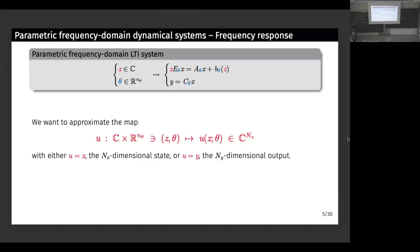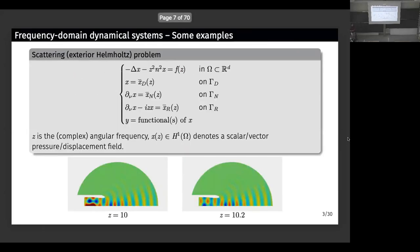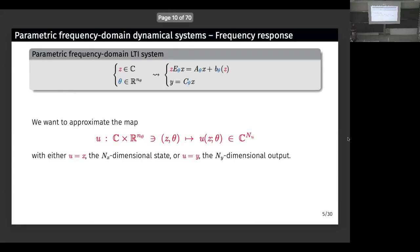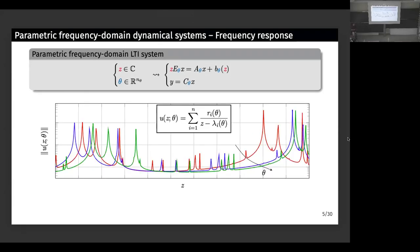In practical applications, we always have additional parameters on top of the frequency. In a scattering problem, you might have geometric parameters, or in the Helmholtz equation, a parametrized index of refraction. The matrix, the forcing term, and the measurement matrix can depend on parameters theta — assumed real, potentially many — and theta could be high-dimensional. So the question is not just to approximate u with respect to z, but also with respect to theta. As we vary theta, we get changes in the frequency response, meaning the residues and poles of the system depend on theta.